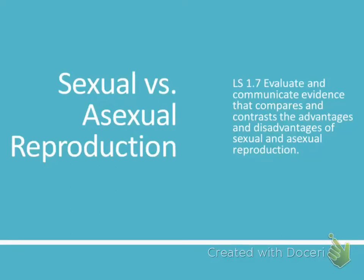Okay folks, this is going to be a little bit different than a normal fun sheet because it's not a fun sheet. It was supposed to be notes we did in class with you, but since we are out, we recorded it for you. So just look at your note page and fill it in as I go along with the slides. It is still sexual versus asexual reproduction, which is standard 1.7: Evaluate and communicate evidence that compares and contrasts the advantages and disadvantages of sexual and asexual reproduction. First, we're going to talk about different examples of what those are, and then we'll talk about why there are advantages and disadvantages.